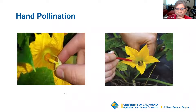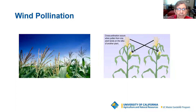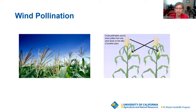Wind pollination — this is corn. The pollen goes from one plant to another and lands on the silks of another plant. Corn and other cereal grains like wheat, oats, barley, and rice are usually wind pollinated, as well as nut-producing trees like walnuts, pecans, and pistachios.